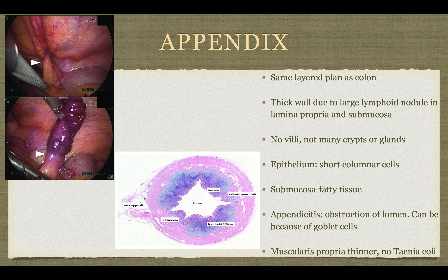The appendix has the same layered plan as the colon. There is a thick wall because of the lymphoid tissue. There are no villi and no crypts, but there are a couple of glands. The epithelium is short columnar cells, with fatty tissue in the submucosa. It mainly serves as a reservoir of lymphoid tissue. More clinically relevant is appendicitis, which is obstruction of the lumen, possibly due to goblet cells. The muscularis propria is thinner, and there's no teniae coli, so the appendix is prone to rupture.